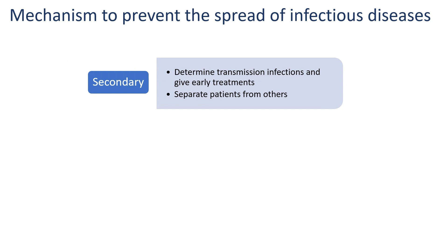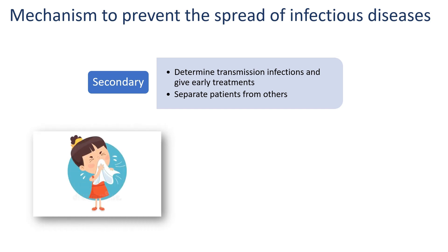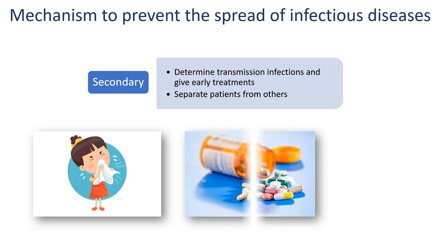The secondary mechanism focuses on treating individuals who have already been infected. This involves identifying infections and their mode of transmission, and implementing measures to isolate infected individuals from healthy populations. Effective treatment protocols, including the use of antibiotics and antiviral medication, are very important in controlling the spread of contagious disease.